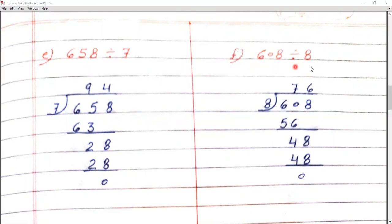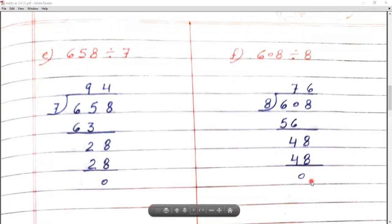Question number F: 608 divided by 8. We use the 8 times table. Since 6 is smaller than 8, we make a pair: 60. 60 doesn't appear in the 8 times table, so we take the nearest smaller number — 8 sevens are 56. We subtract 56 from 60: borrow, 10 minus 6 is 4. Bring down next digit 8, making 48. 8 sixes are 48. 48 minus 48 is 0. The answer is 76.